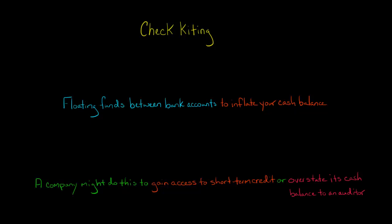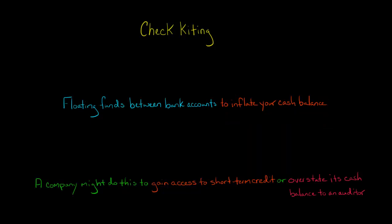In this video, we're going to discuss a scheme called check kiting. Check kiting involves floating funds between your bank accounts using checks to inflate your cash balance. A company or person might do this because they need money today and don't have it — it's a way of accessing short-term credit, or to fool an auditor into thinking the company has more cash on hand than it actually does.